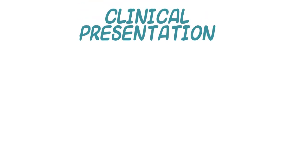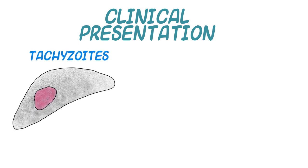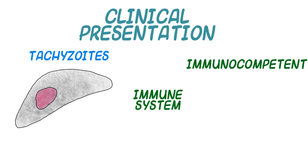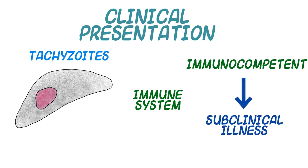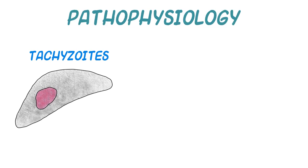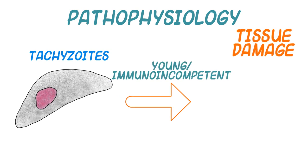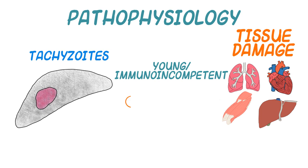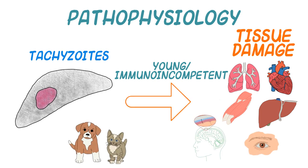What clinical problems does Toxoplasmosis cause? Tachyzoites lead to tissue damage, and the immune system plays an important role in limiting an infection. In adult immunocompetent animals, toxo is usually a subclinical illness. But the story can be quite different in the young, where systemically distributed tachyzoites can cause damage to the lungs, heart, skeletal muscle, liver, meninges, retina, and lymph nodes in young puppies, kittens, and piglets.